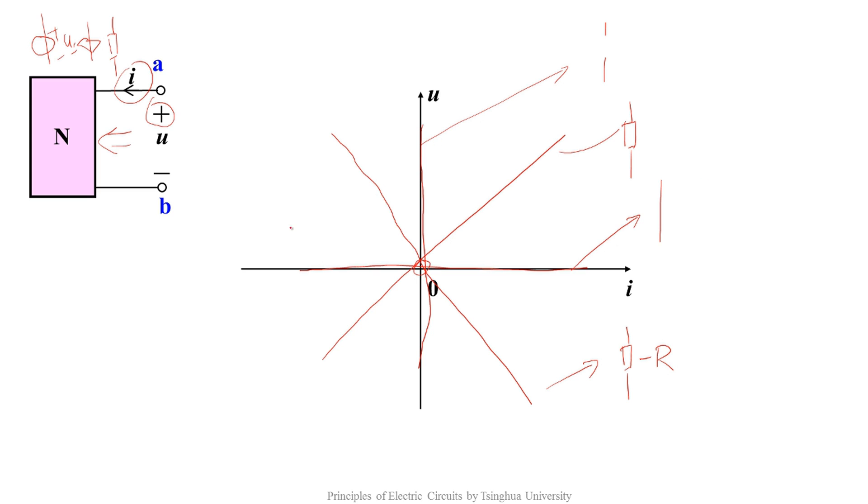Besides, this line represents a voltage source. Similarly, this line also represents a voltage source. This line represents a current source, and this line also represents a current source.